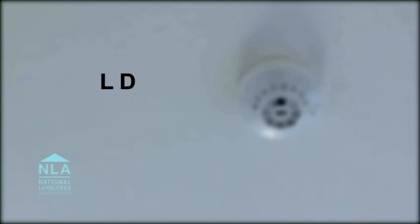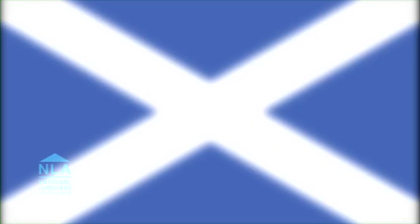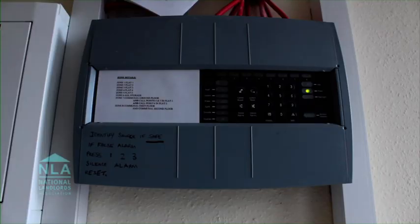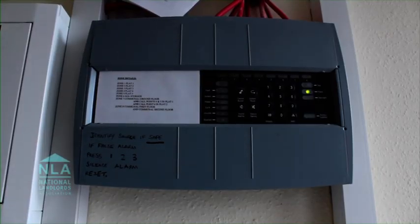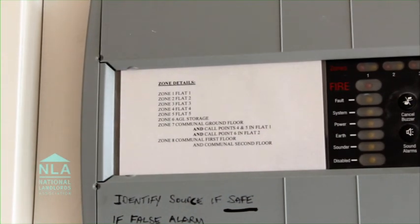For example, LD1 would cover all areas of the building, whilst LD3 covers escape routes only. It should be noted that in Scotland any alarms installed or replaced on or after 3 September 2007 must be mains powered. There are no circumstances where no alarm in a home is acceptable or should be considered as being acceptable.